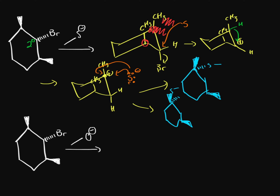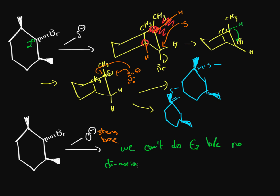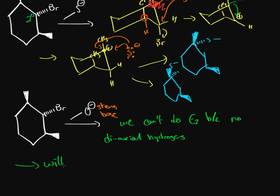In this last example we have an oxygen with a negative charge — a strong base — so we have to consider E2. For E2 we need diaxial hydrogens, but in this conformation the carbons are axial, meaning the only available hydrogens for E2 would be equatorial, not axial. So we cannot do E2 because there are no diaxial hydrogens. And SN2 is still blocked by the same steric hindrance as before. So this must be an SN1 reaction.